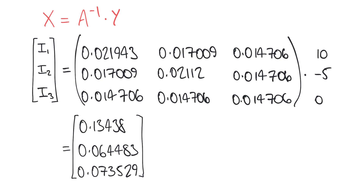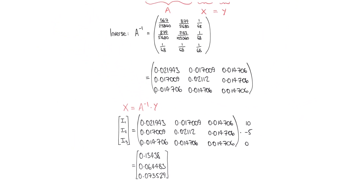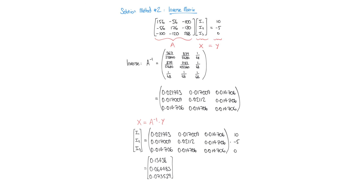We haven't discussed in detail how to find the dot product or the inverse matrix here — we have those in separate videos — but this illustrates how that approach gives the same results. Remember that finding I1, I2, and I3 may not be sufficient on its own; you can work out the differences of these currents to find the actual current flowing in each component, just as we did before. I hope you've found this video useful for exploring a more complicated mesh analysis example and for looking at two methods — Cramer's rule and the inverse matrix — to solve that system of equations.